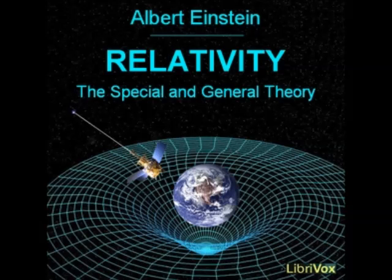In the second place, our result shows that, according to the general theory of relativity, the law of the constancy of the velocity of light in vacuo, which constitutes one of the two fundamental assumptions in the special theory of relativity, cannot claim any unlimited validity. A curvature of rays of light can only take place when the velocity of propagation of light varies with position. Now, we might think that as a consequence of this, the special theory of relativity, and with it the whole theory of relativity, would be laid in the dust. But in reality, this is not the case. We can only conclude that the special theory of relativity cannot claim an unlimited domain of validity.